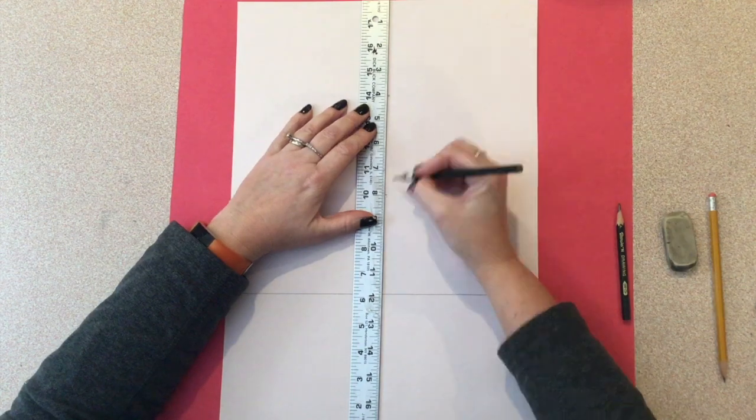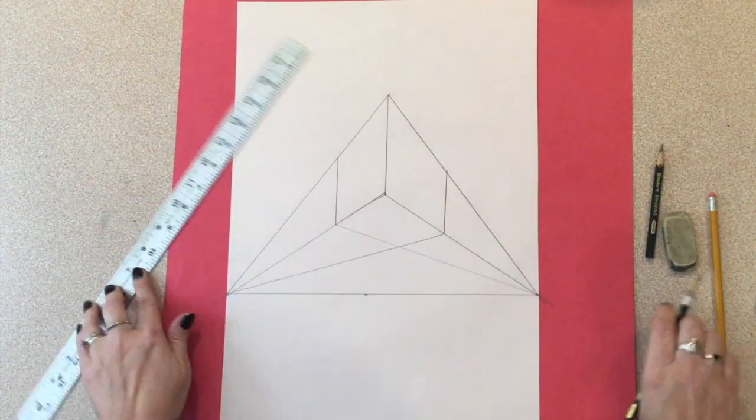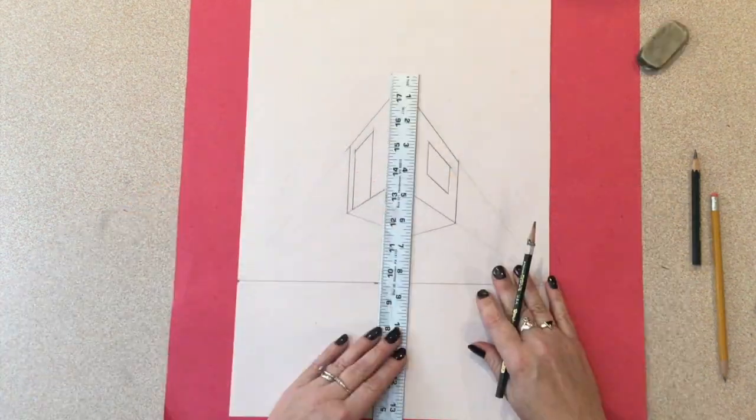You should have a piece of 12-by-18-inch paper with your basic treehouse on it already drawn, a pencil, a ruler, and an eraser.